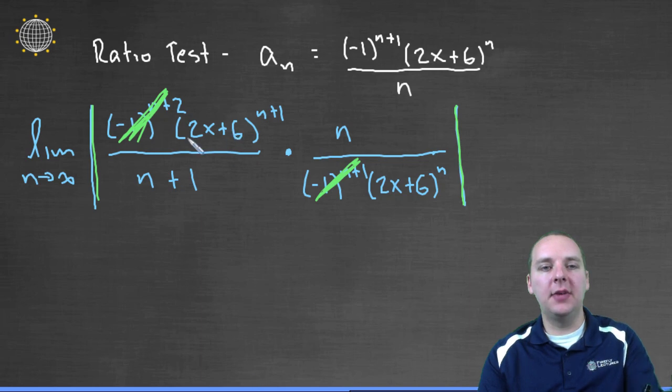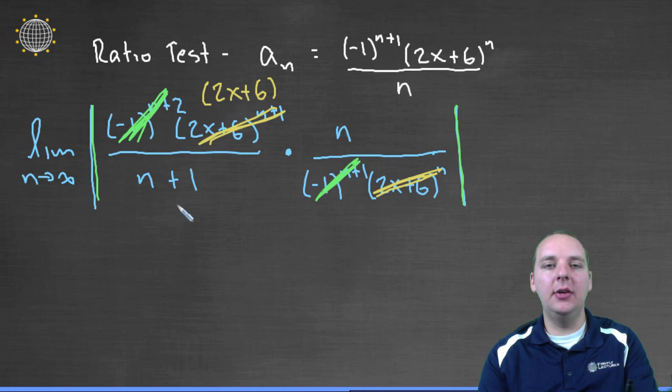Second thing I see is I've got these 2x plus 6 to the n plus 1's divided by 2x plus 6 to the n. I have one additional factor of 2x plus 6 in the numerator. I can't really simplify n over n plus 1, so I'll just have to leave that the way it is.